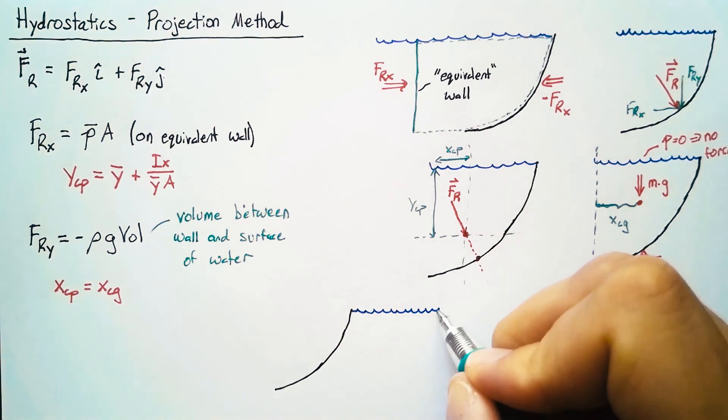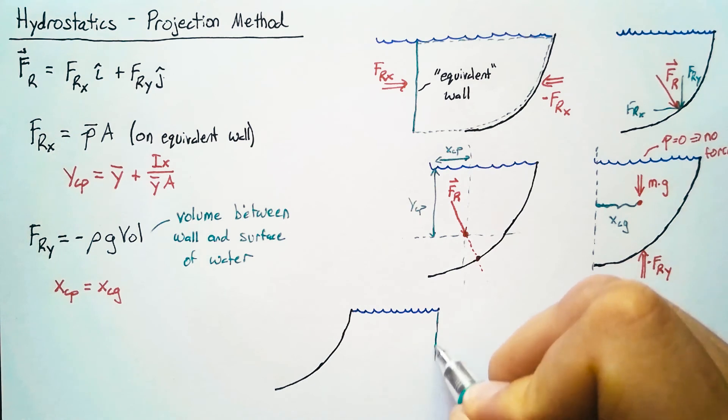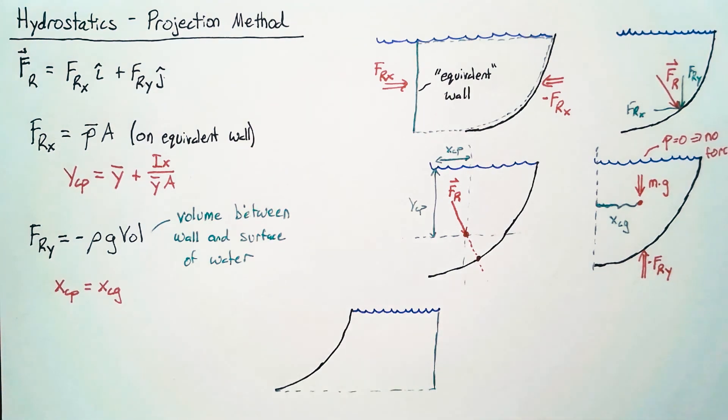If we're looking at the x component, that really doesn't change, right? We still have this same equivalent wall that we can draw and we can still say that the reaction force in the x direction is going to be equal to p bar a. Of course it's going to be negative now because we're pushing to the left.